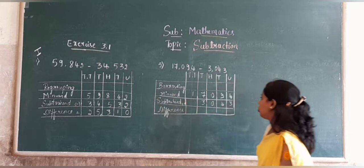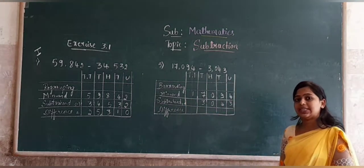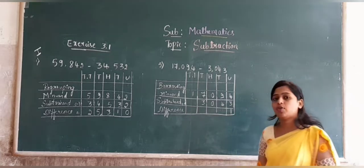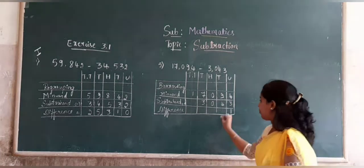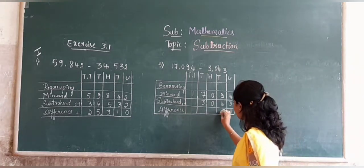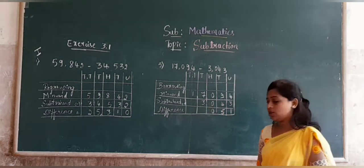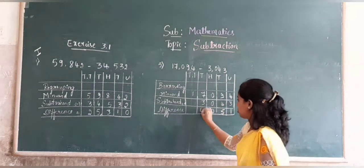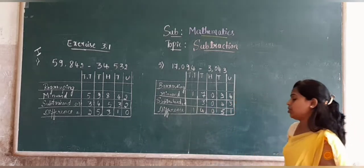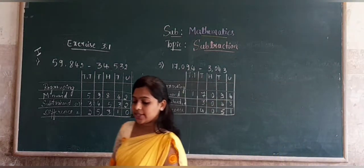Now subtract these two numbers. 4 minus 3 is 1, 9 minus 4 is 5, 0 minus 0 is 0, 7 minus 3 is 4. We get 40,051.